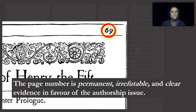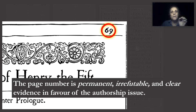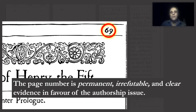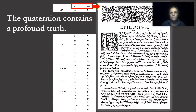The page number is permanent, irrefutable, and clear evidence in favour of the authorship issue. Unless opponents want to disagree with the book's long-dead editors and compositors and the proof found on this page, they cannot refute its existence. Furthermore, the quaternion contains a profound truth just like a quaternity does.